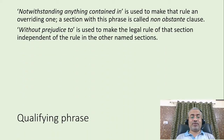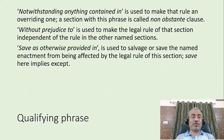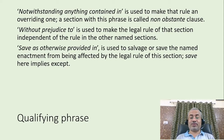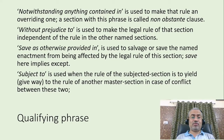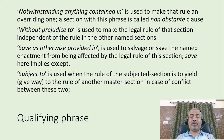Another qualifying phrase we see is 'without prejudice to', which is used to make the legal rule of that section independent of the rule in the other named section. One more case is 'save as otherwise provided in', which is used to salvage or save the named enactment from being affected by the legal rule of this section — 'save' here simply implies 'except'. One more qualifier is 'subject to', which is the opposite of 'notwithstanding'. When it is used, the rule of the subjected section is to give way to the rule of another master section in case of conflict between these two.